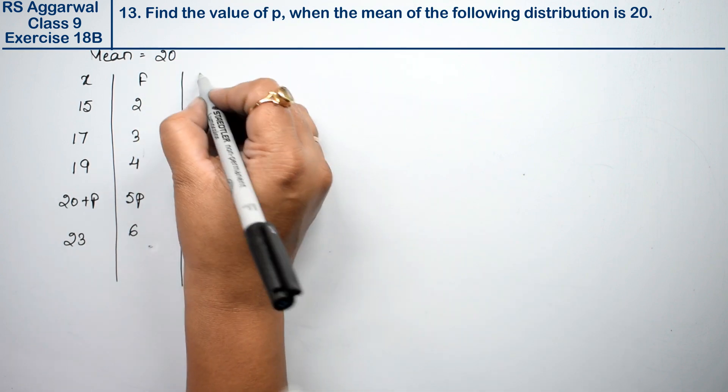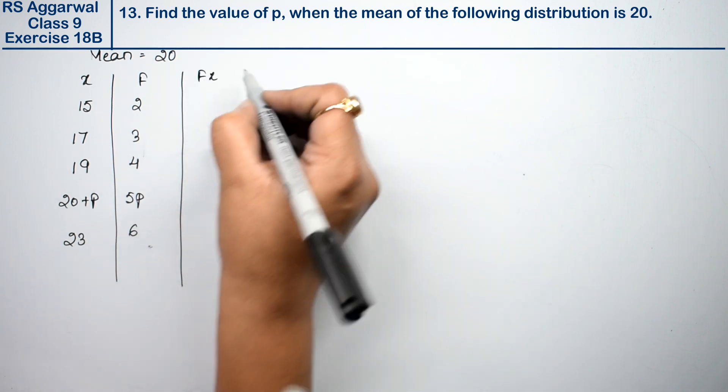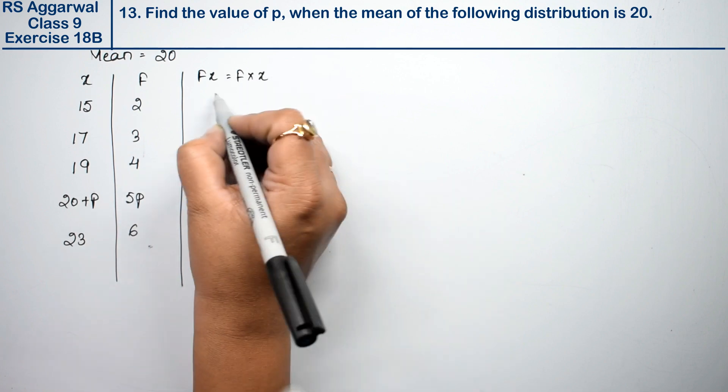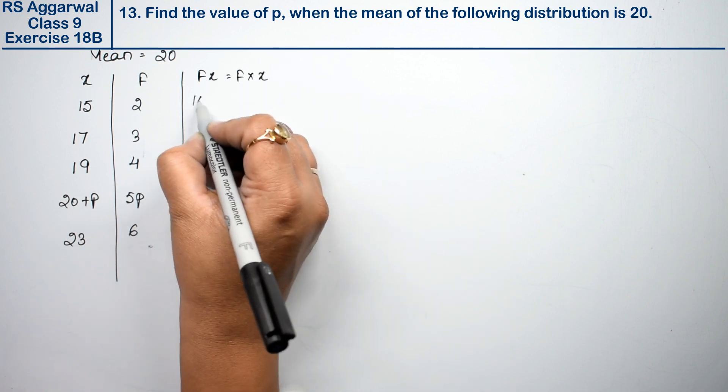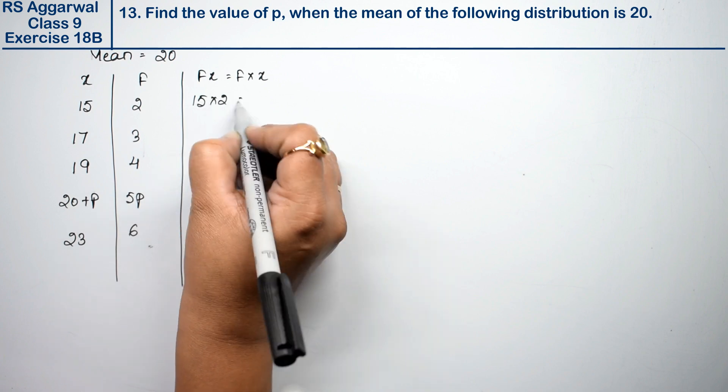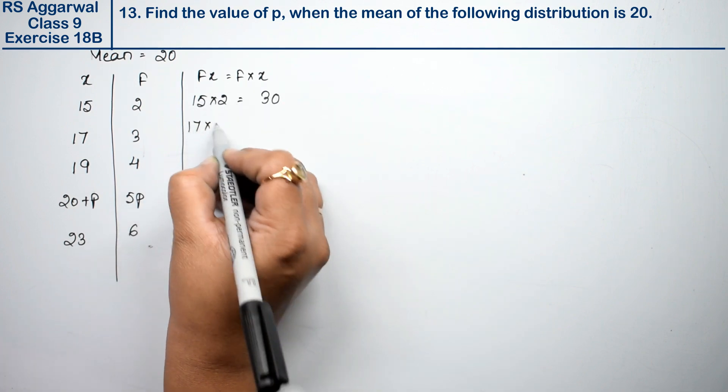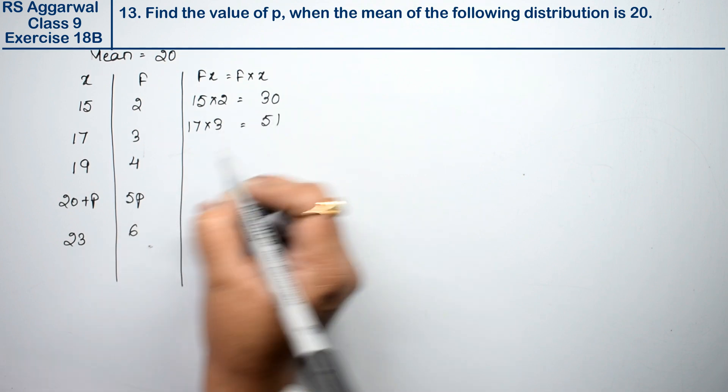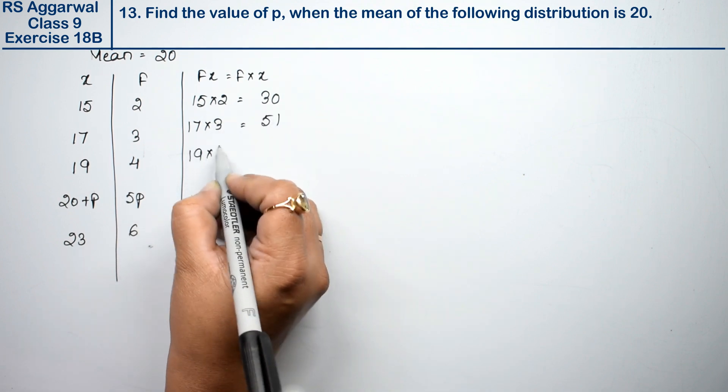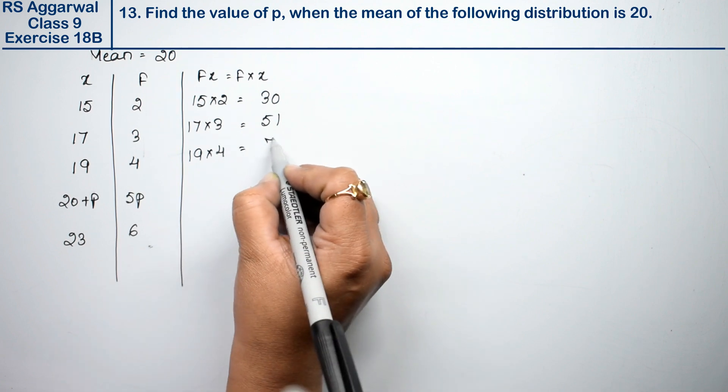We need to find fx. How do we calculate fx? f times x. That means 15 times 2 is 30, 17 times 3 is 51, 19 times 4 is 76.